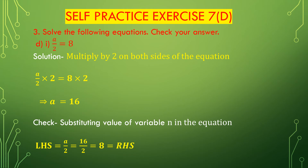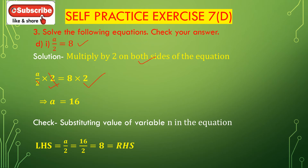Now we solve question number 1d: a/2 = 8. Here a is divided by 2, so we have to multiply by 2 on both sides. We get (a/2) multiplied with 2 = 8 multiplied with 2. The 2s cancel and we get a = 8 multiplied with 2 = 16. The value for the variable a is 16.